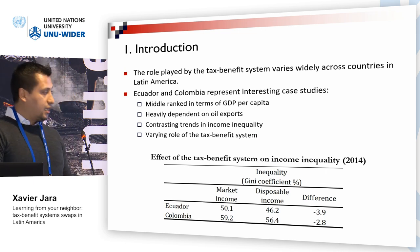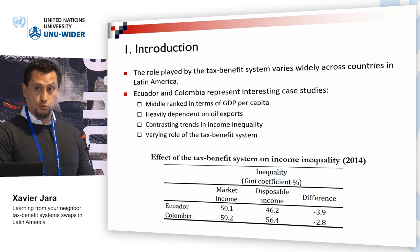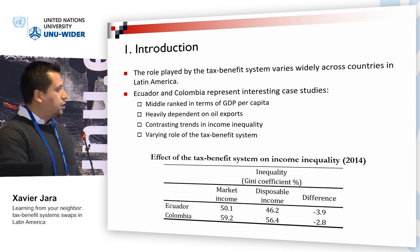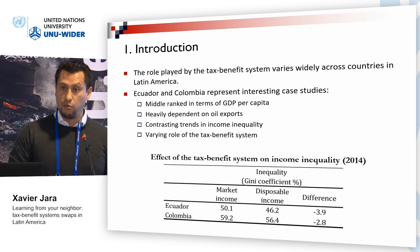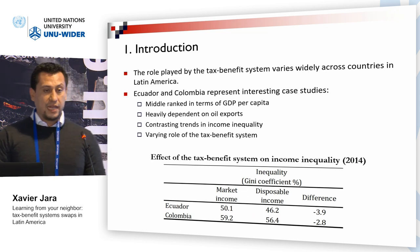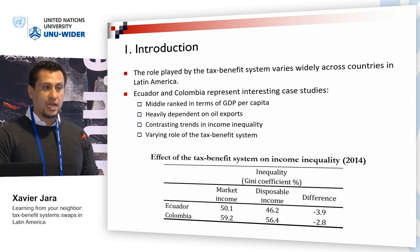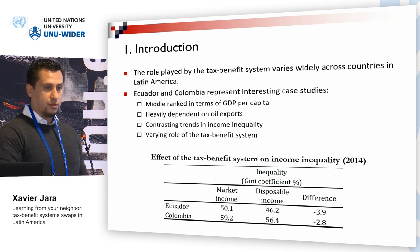If we look at market income, the Gini coefficient in Ecuador is 50.1, whereas in Colombia it is much larger at 59.2. Once tax benefit policies are applied, the Gini coefficient in Ecuador falls by 3.9 points, whereas the Gini coefficient falls only by 2.8 points in Colombia. We would like to know to which extent differences in tax and benefit rules account for differences in disposable income between the two countries.